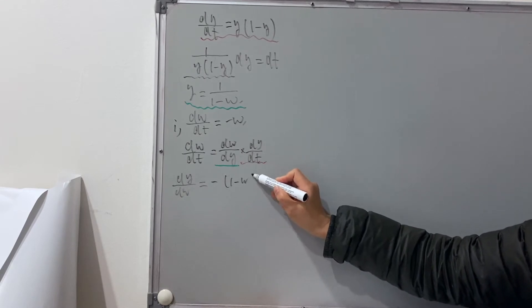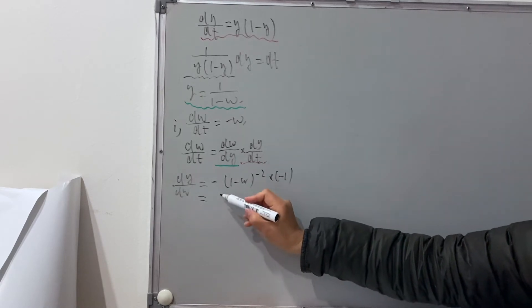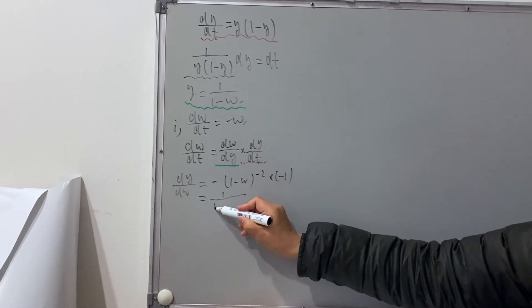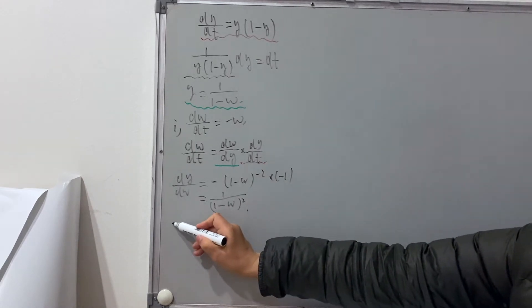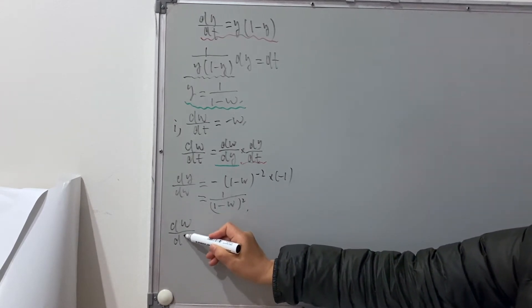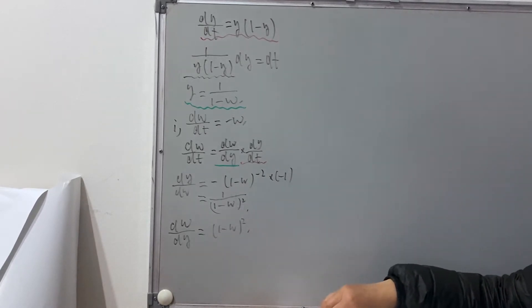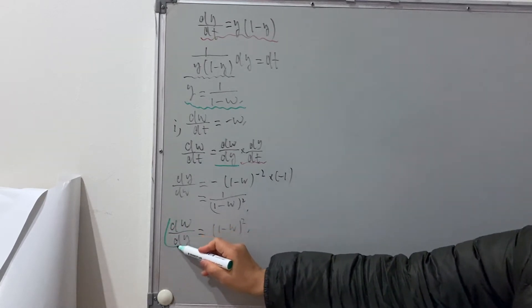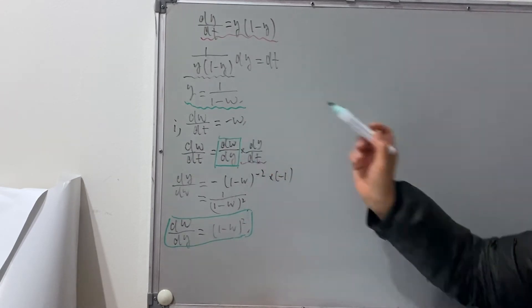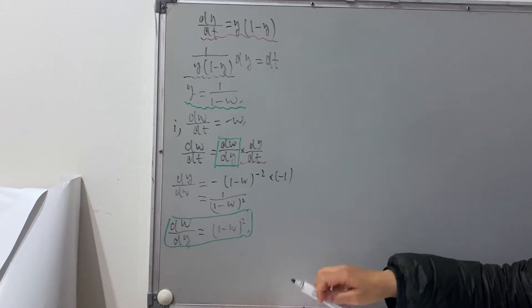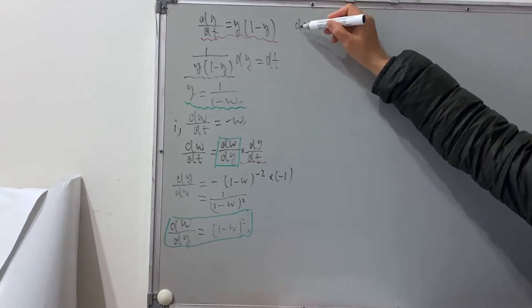We get (1 minus w) to the power of negative 2 times negative 1, which gives us 1 over (1 minus w) all squared — but that's dy/dw. Then from there we do the reciprocal, so we get dw/dy which gives us (1 minus w) all squared. So this part is ready; we can substitute this dw/dy in.